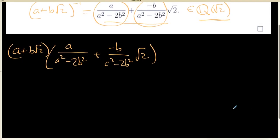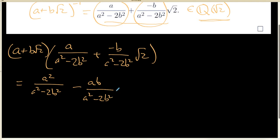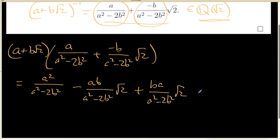I distribute this out and I'm going to get a squared over a squared minus 2b squared. Then I'm going to have minus ab over a squared minus 2b squared times the square root of 2. Then I'm going to have plus ba over a squared minus 2b squared times the square root of 2. And finally I'm going to have minus b squared over a squared minus 2b squared times the square root of 2 times the square root of 2, which is going to be a 2.